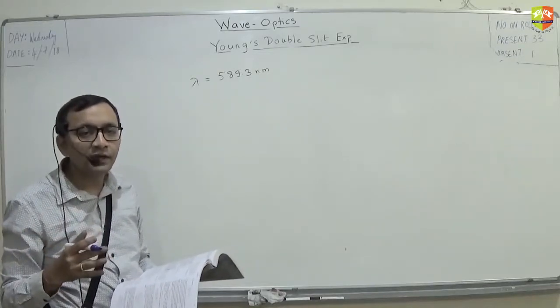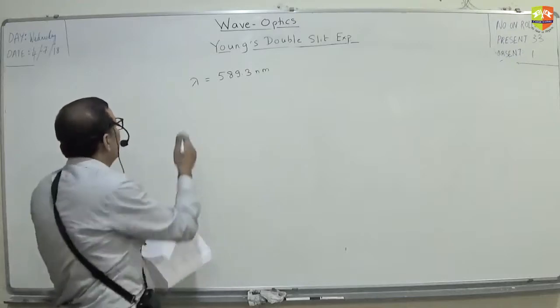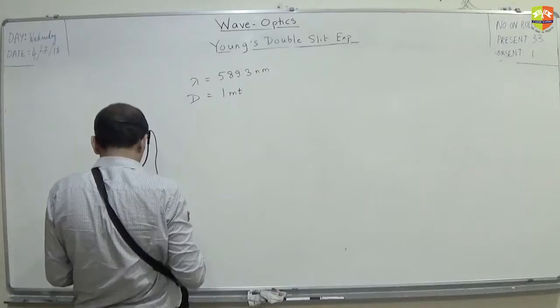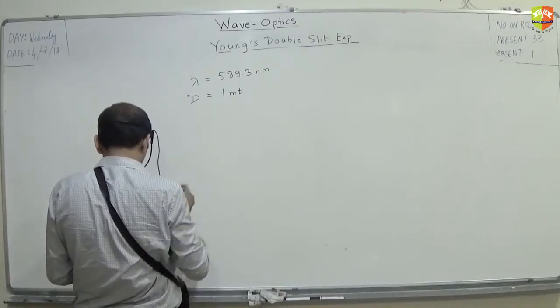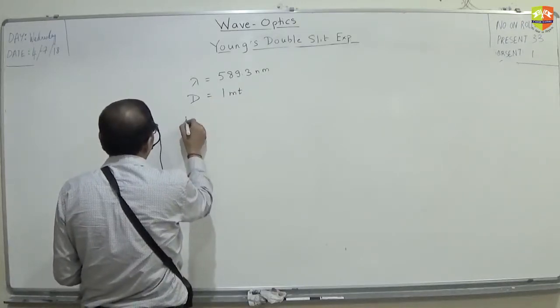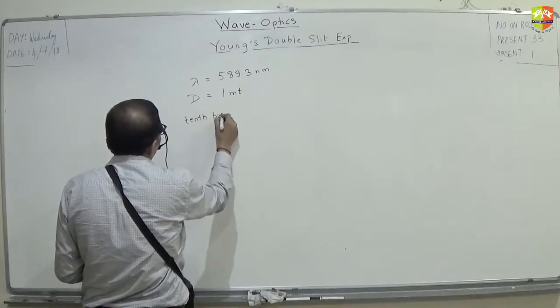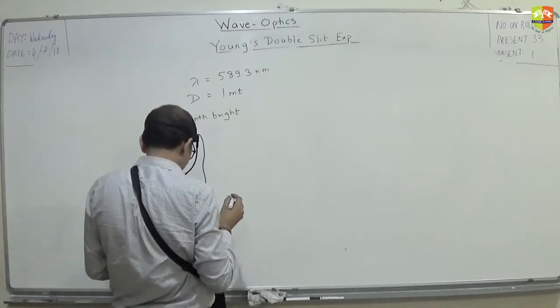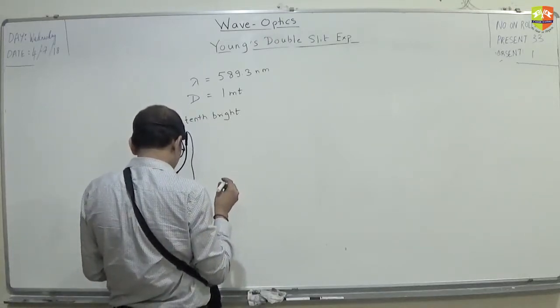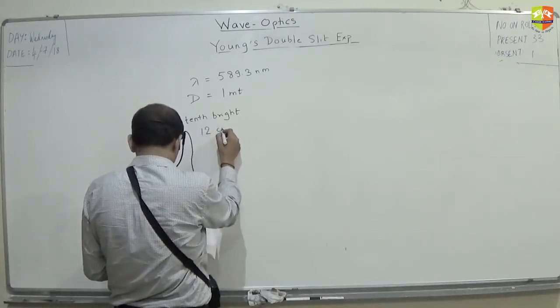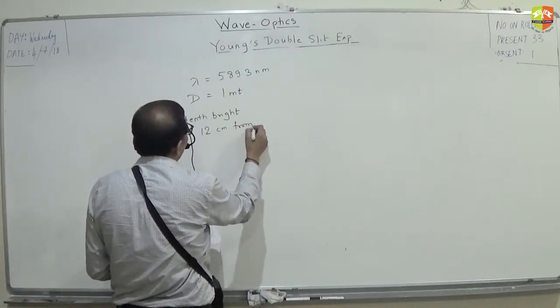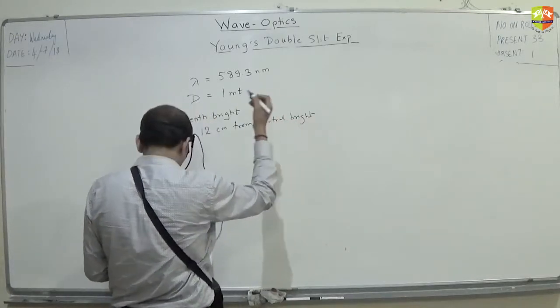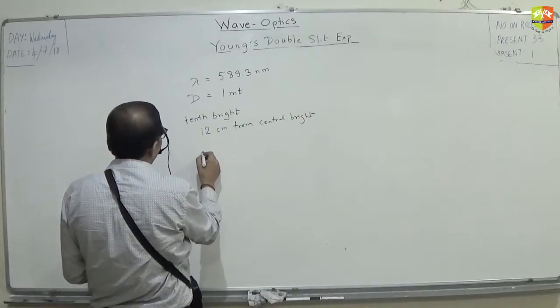So what is 100 centimeter? Capital D. So capital D is 100 centimeter or 1 meter. What is given is the 10th bright fringe has its center at a distance of 12 centimeter from central bright. Okay. Find out separation between the slit. Small D is what?